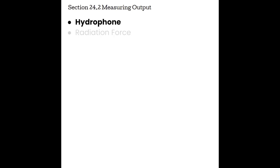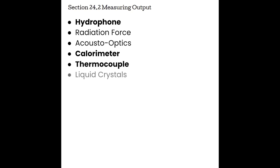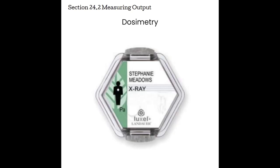There are multiple tools to do this with, such as the hydrophone, radiation force, acousto-optics, calorimeter, thermocouple, and liquid crystals. These tools can calculate the dose of ultrasound that a patient is getting. Dosimetry is the study of dosing, and it is typically used as the determination and measurement of the amount or dosage of radiation absorbed by a substance or living organism. As a side note, dosimeters are typically used to monitor personnel working with radioactive materials. Dosimeters are not typically worn by sonographers, but researchers do continue to evaluate the long-term bioeffects of ultrasound on patients and operators.